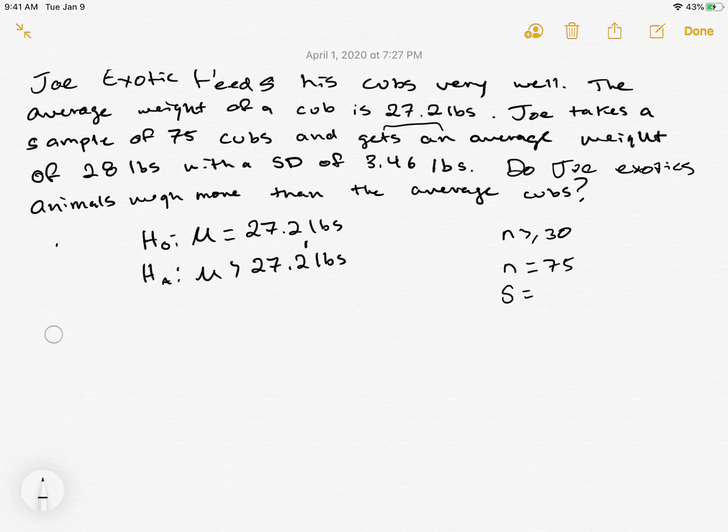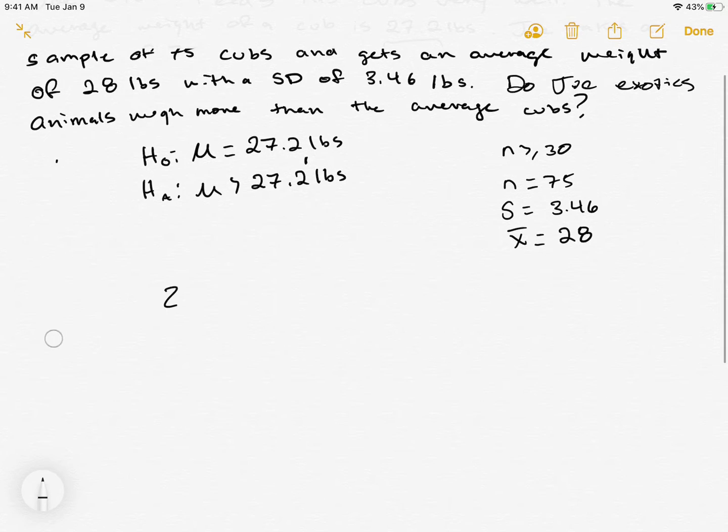We have our standard deviation is equal to 3.46 and our x-bar is equal to 28. Our next step is we want to make a test statistic. Your test statistic is simply just a z-score, or a t if your sample size is less than 30. So we're going to do the z-test here. What we do for this is we're going to take our x-bar minus μ divided by our standard error, which is just going to be s over the square root of n.